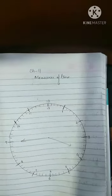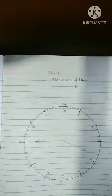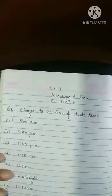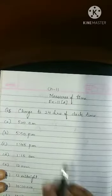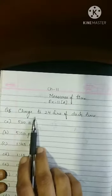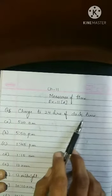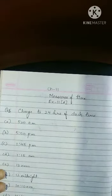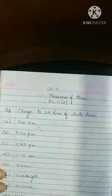Now on this basis, I will start with the question, Measures of Time, question number 3, change to 24 hours of clock time. See children, 2 things are there. One is 12 hours of clock time and other is 24 hours of clock time.